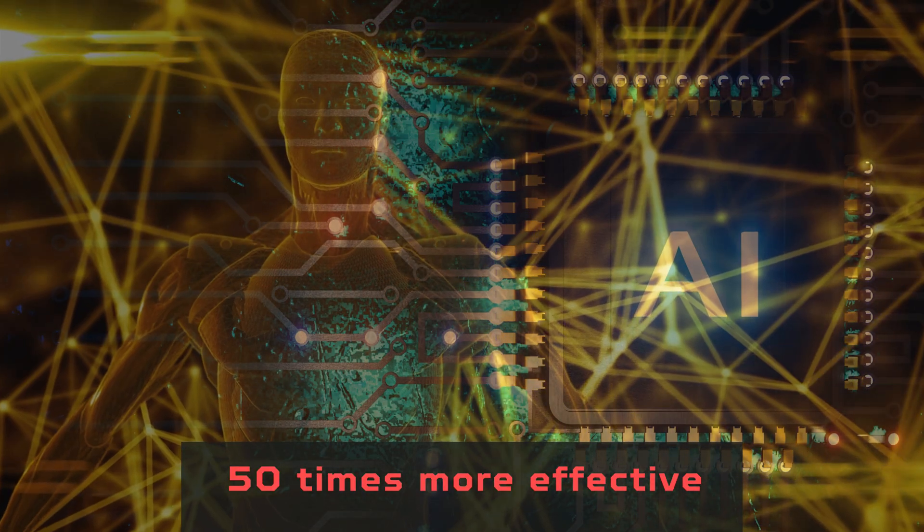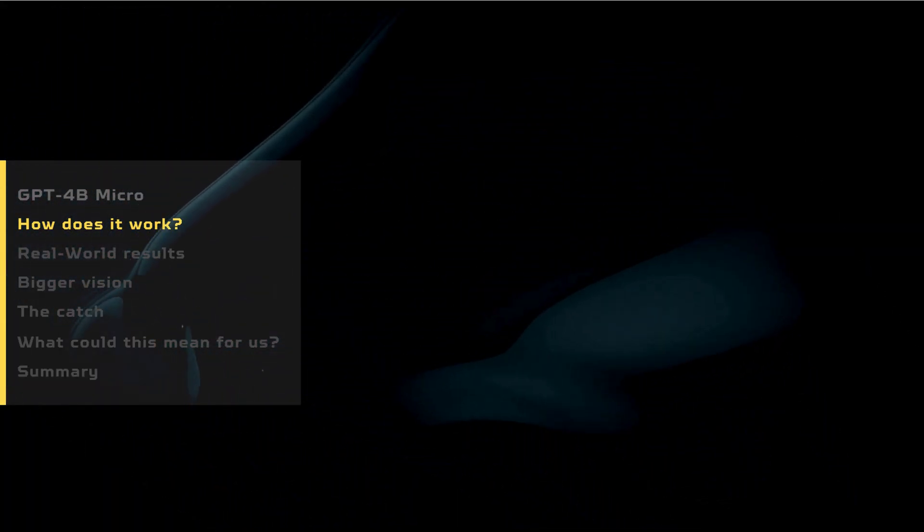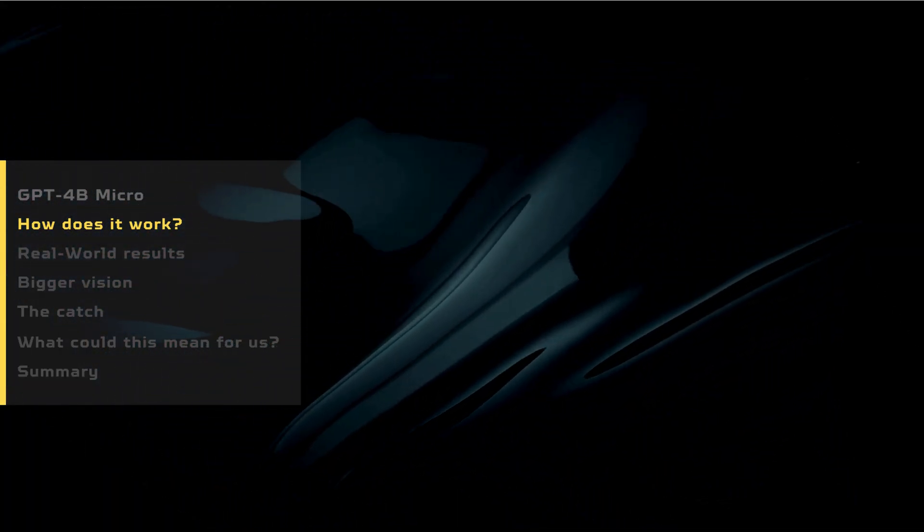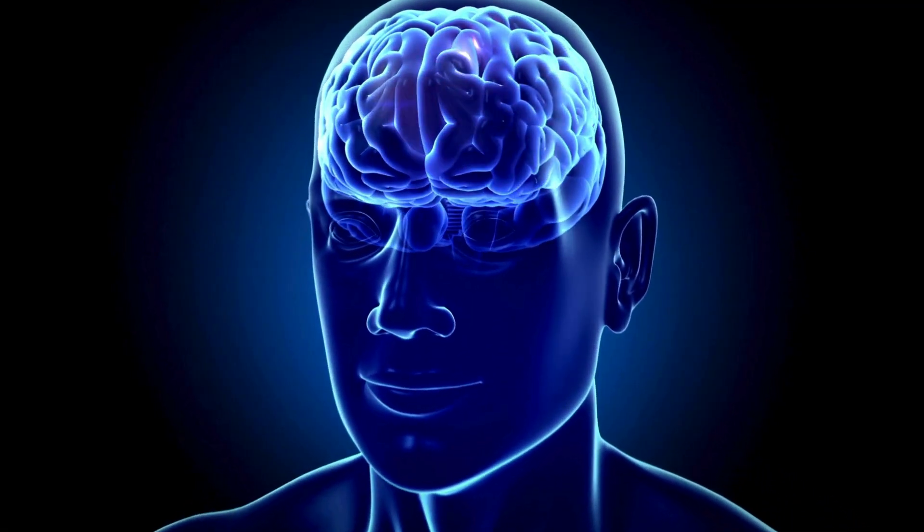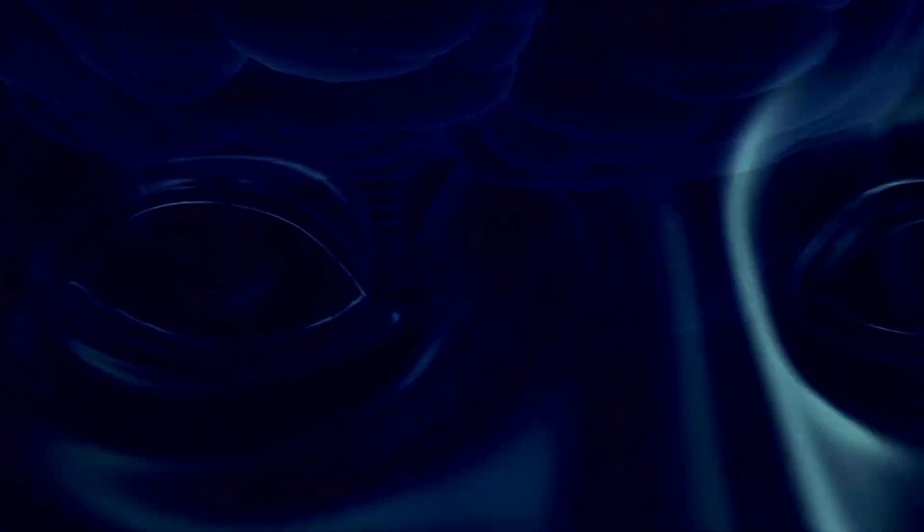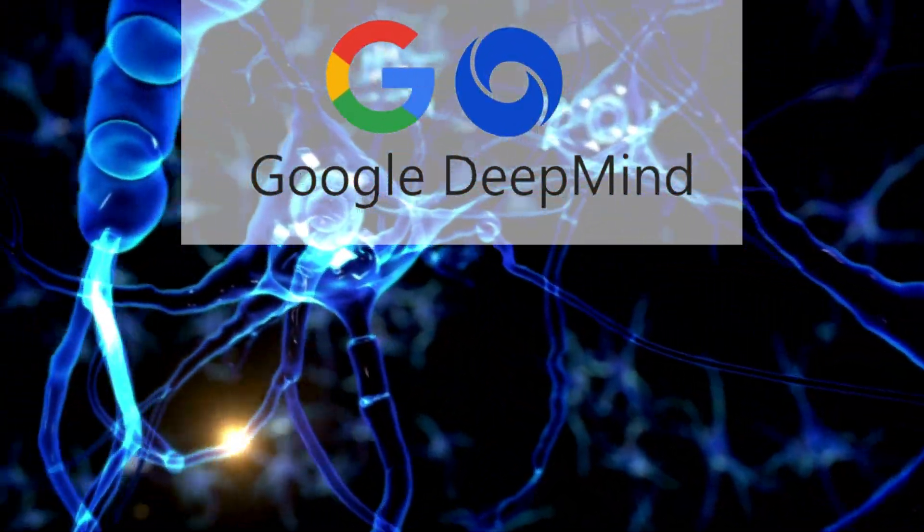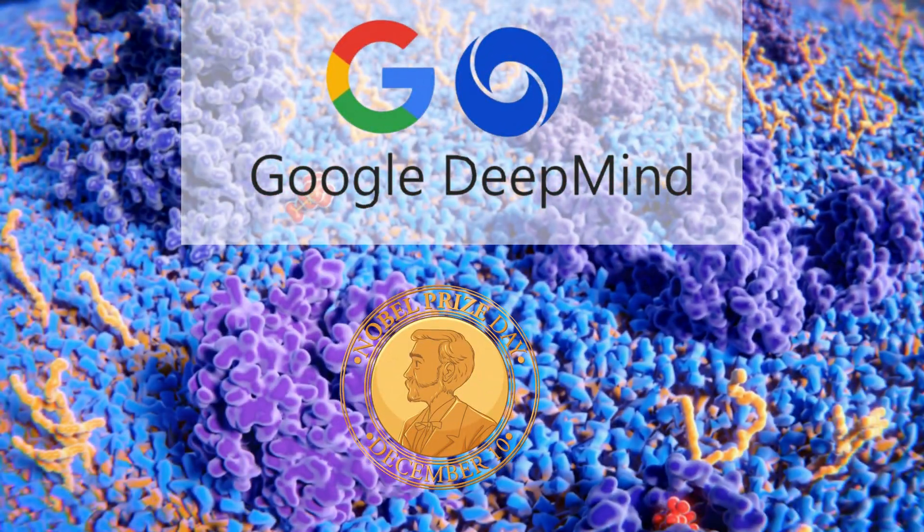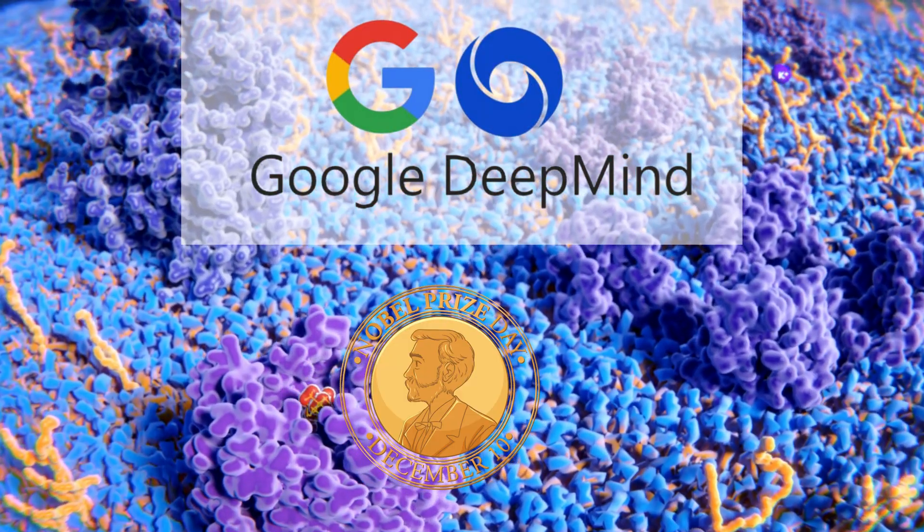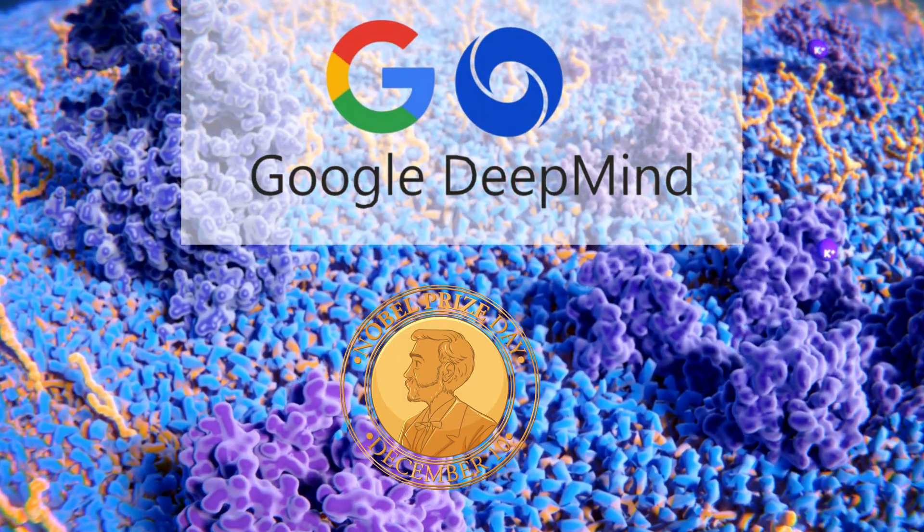Amazing indeed! Now, you might be wondering, how does GPT-4B-Micro actually achieve this? Well, let's start by looking at how AI has already transformed biology. Take Google DeepMind's AlphaFold, for example. It earned a Nobel Prize for predicting the 3D shapes of proteins, a crucial step in understanding how they work.